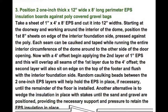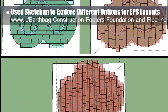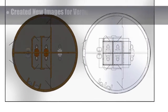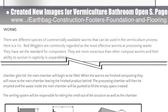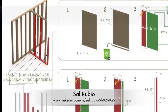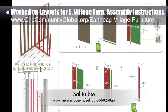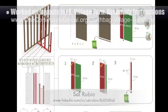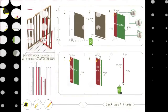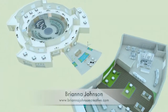Behind the scenes, we also used SketchUp to explore different options for EPS layouts for insulating the ground around the domes, and created new, clearer images for the vermiculture bathroom open source page. Sal Rubio, industrial designer, completed his final week of volunteering — his 14th week — helping on the earthbag village murphy bed furniture assembly instructions. The final product of our collaboration includes layouts for the intro pages to each section and the tools page planned for the intro to the entire instruction set.